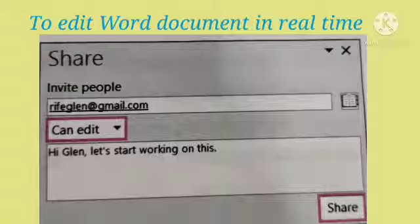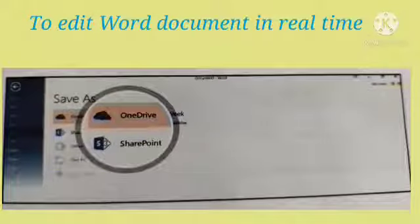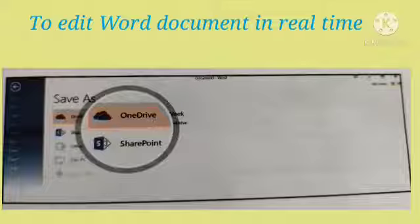When you click the Share button, your friends receive an invitation email with a link to the document. They have the option to edit or view in Word 2016 or Word Online. If you are in the document at the same time as others, you will see a flag representing each person and where they are located.